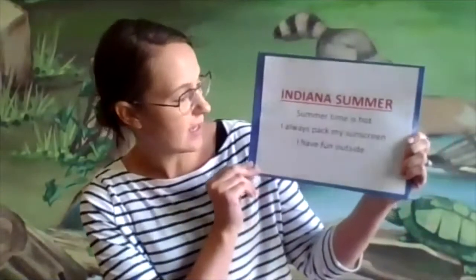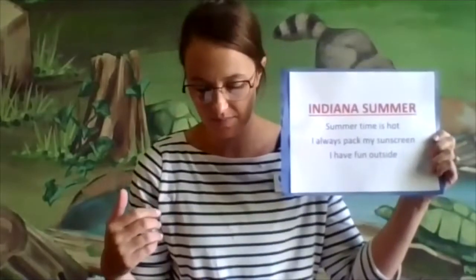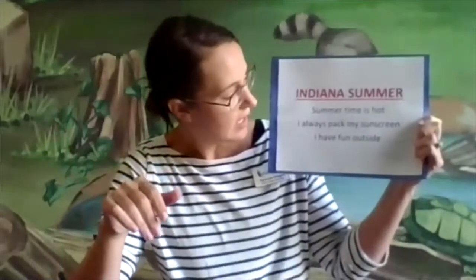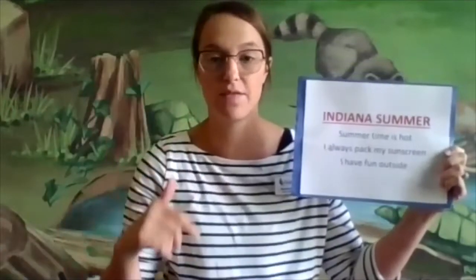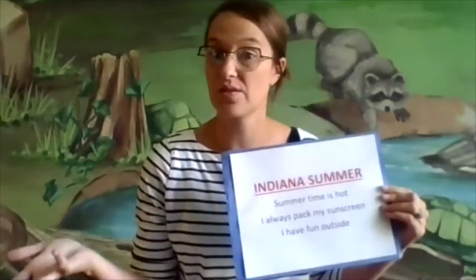Here's one I wrote called "Indiana Summer": "Summertime is hot. I always pack my sunscreen. I have fun outside." Let's test the syllables — have you counted using sounds on your fingers? Let's do this together. "Summertime is hot" — that's five. "I always pack my sunscreen" — that's seven. "I have fun outside" — that's five. So it goes five, seven, five each line. A lot of traditional haikus are written about weather, and I chose to write about weather because it's sunny outside today in Indiana.